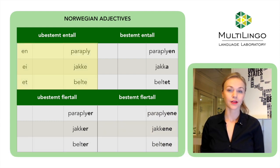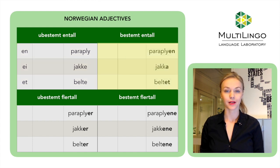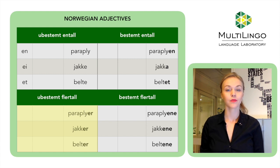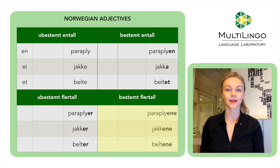En paraply — singular indefinite, meaning 'an umbrella.' Paraplyen — the umbrella, singular definite. Paraplyer — umbrellas, plural indefinite. And paraplyene — the umbrellas, plural definite.